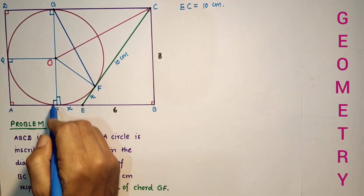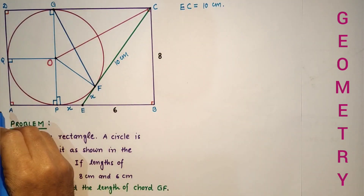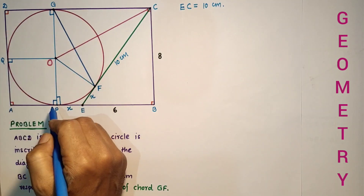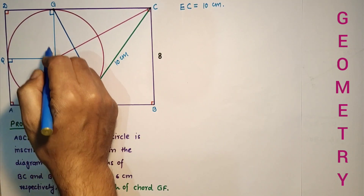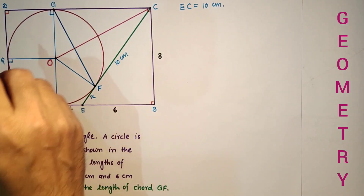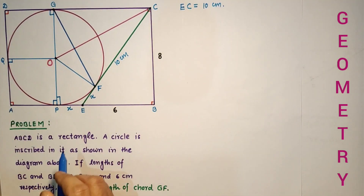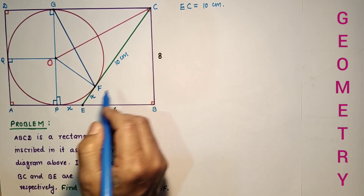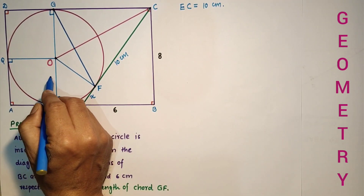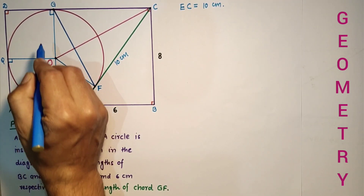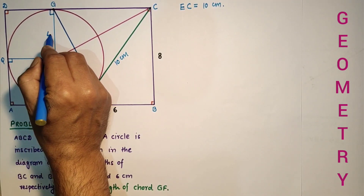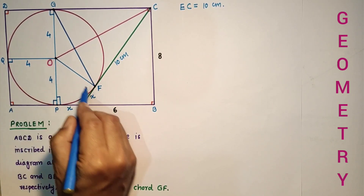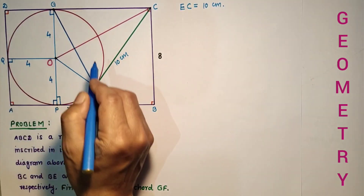Since BC is 8 cm (given), BC equals PG equals AD. PG equals PO plus OG, meaning PG is the diameter. So the radius of the circle is half of 8, which is 4. All the radii are 4.